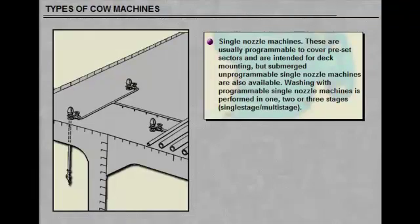Dual nozzle unprogrammable machines. This type may be deck mounted or submerged. The dual nozzle machines are usually fully orbital and need no programming.